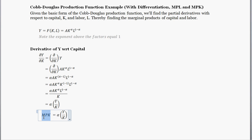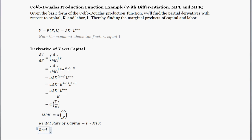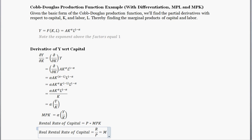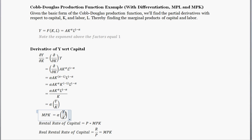This marginal product of capital gets fed in later to finding the rental rate of capital. The nominal rental rate of capital equals the price level times the marginal product of capital. The real rental rate — corrected for prices — equals just the marginal product of capital, which we already found. Sometimes you're given a value of alpha; for example, if alpha equals one-half, you'd have one-half times Y divided by K.